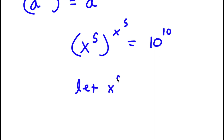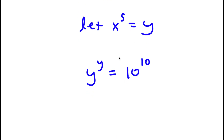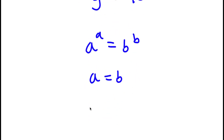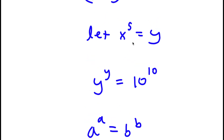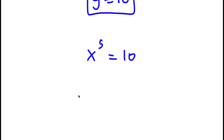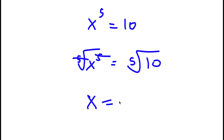Now I'm going to let x to the power of 5 equal the variable y. So if I replace x to the power of 5 with y, I get y to the power of y is equal to 10 to the power of 10. Now if I have something in the form a to the power of a equals b to the power of b, this means that a is equal to b. So in this case, y is equal to 10. Remembering that x to the power of 5 equals y, I have x to the power of 5 equal to 10. Taking the fifth root on both sides, the fifth root of x to the power of 5 is simply x, so x is equal to the fifth root of 10. So this is my answer.